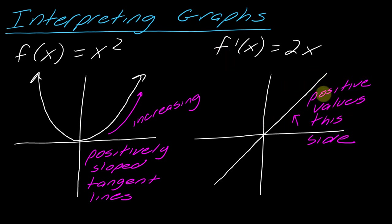These are all positive y values on this side. So these are positive values, so that would tell me I have positively sloped tangent lines. So you just kind of want to repeat that to yourself and remember that this is actually telling you information about the slopes of your tangent lines.